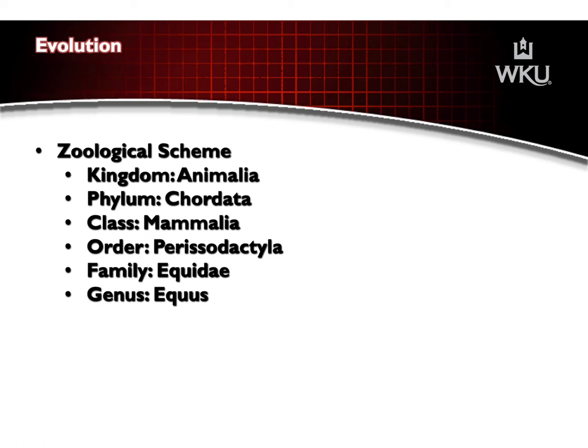The zoological scheme of the horse for evolution: the kingdom is Animalia, the phylum is Chordata, the class is Mammalia, the order is Perissodactyla, the family is Equidae, and the genus is Equus.